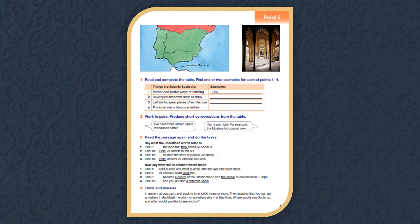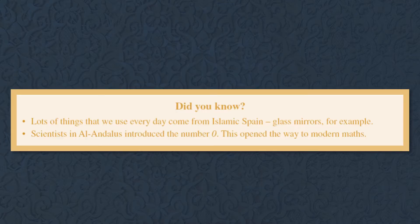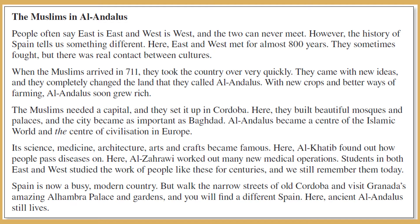This is our page and today inshallah we'll take the first activity. Did you know lots of things that we use every day come from Islamic Spain? Glass mirrors, for example — we talked about this in the previous lesson. Scientists in Al-Andalus introduced the number zero, which is very important in math. Without zero, different things won't be solved in math. This opened the way to modern math.